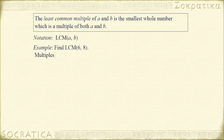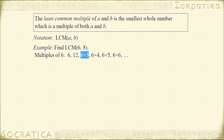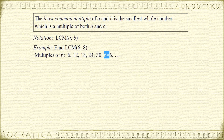Let's start by listing the multiples of 6. They are 6 times 1, 6 times 2, 6 times 3, 6 times 4, 6 times 5, 6 times 6, and so on. Evaluating these: 6 times 1 is 6, 6 times 2 is 12, 6 times 3 is 18, 6 times 4 is 24, 6 times 5 is 30, and 6 times 6 is 36.